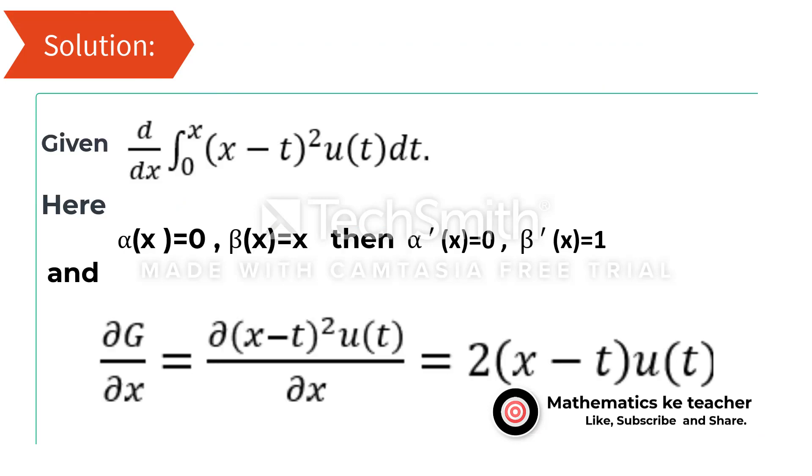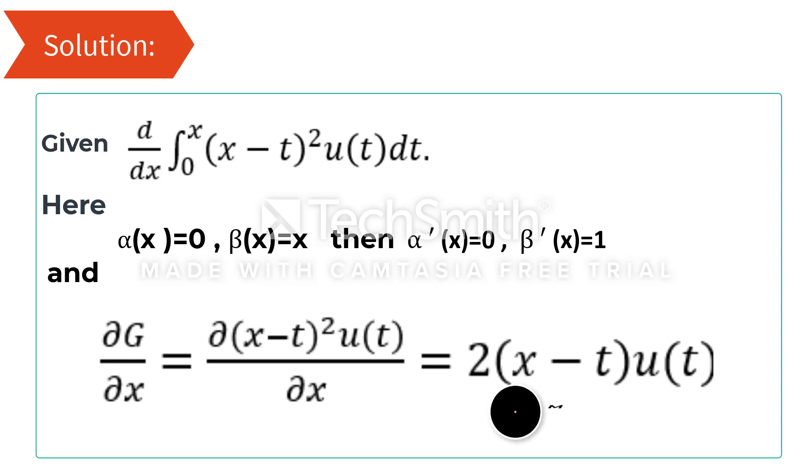Solution. In the given integral, α(x) equals 0, β(x) equals x, and g(x,t) equals (x minus t) whole square u(t). Then, the first order derivative of α(x) equals 0, and the first order derivative of β(x) equals 1.